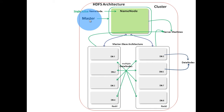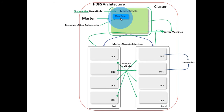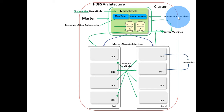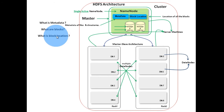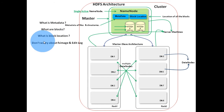Name node manages the file system namespace. That is, it stores metadata of all the files and directories of the file system. It stores the location of all the blocks in the cluster. It also stores FS image and edit log. I will answer questions about metadata, blocks, and block location in this session. FS image and edit log will be explained in detail when explaining checkpointing.